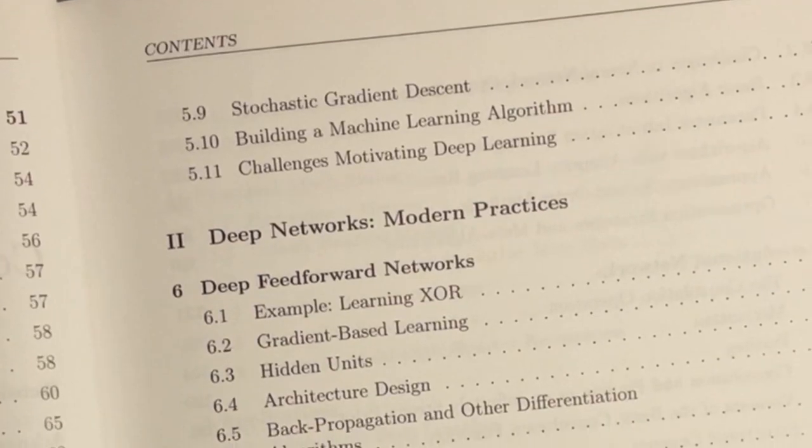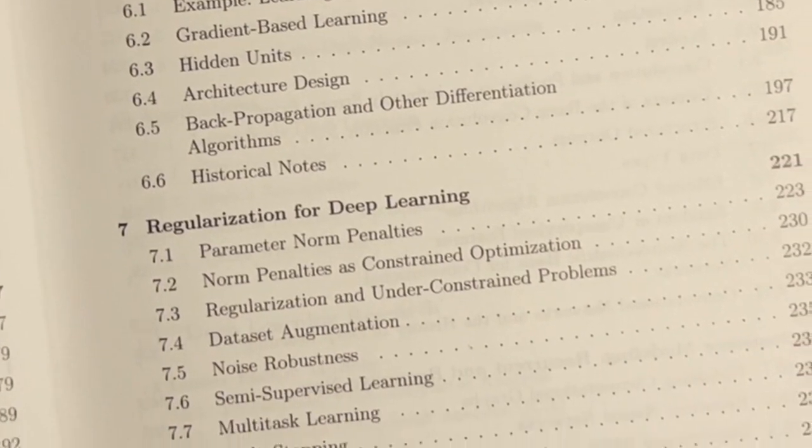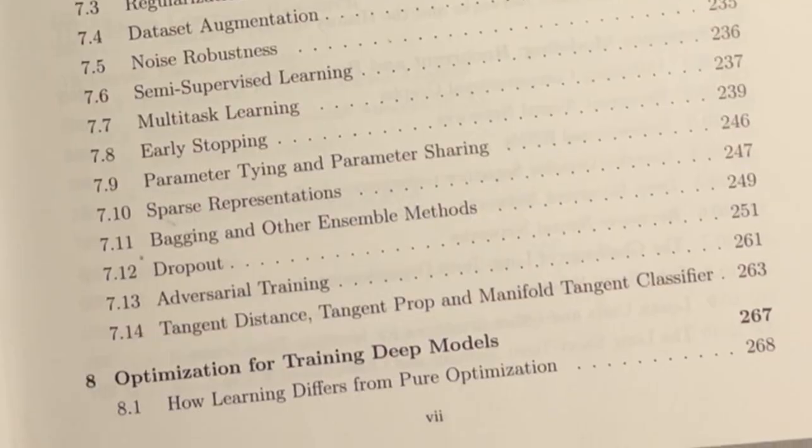In deep learning, bias is what statisticians call the intercept. In statistics, bias is a non-normal pattern in the residuals.